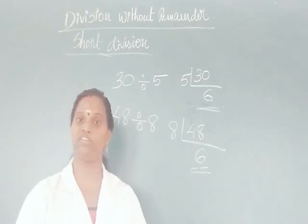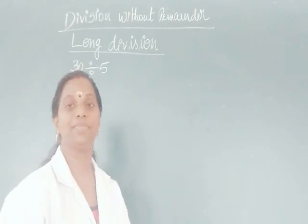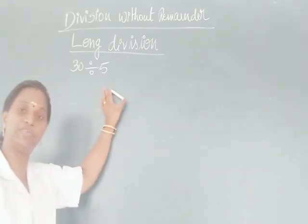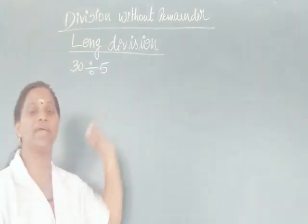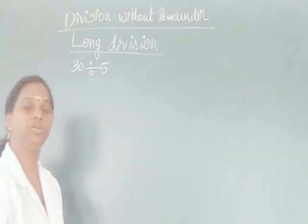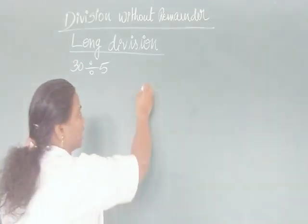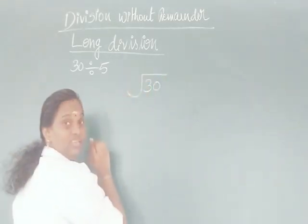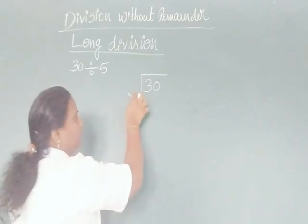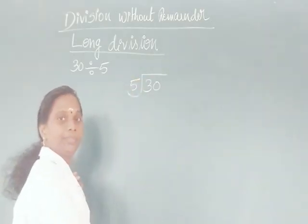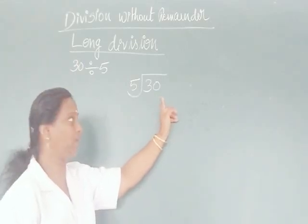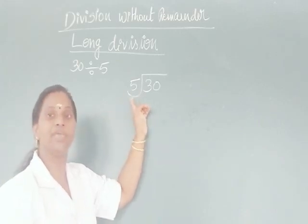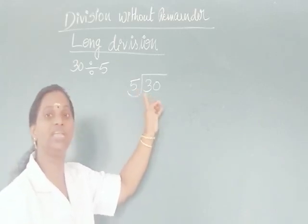The next one is long division without remainder. In the long division method, we write 30 divided by 5 like this: write 30 inside the long division bracket and 5 on the outside. Here, 30 is called the dividend and 5 is called the divisor. Then check whether the first digit, 3, is divisible by 5.